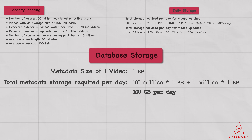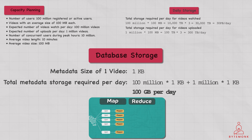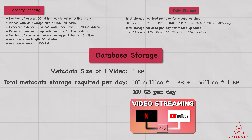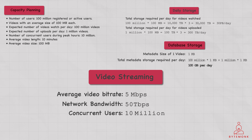The videos can be stored in a distributed file system such as HDFS, which can provide reliable and scalable storage for large amounts of data. Alternatively, videos can also be stored in a cloud storage service such as Amazon S3 or Google Cloud Storage. Assuming an average video bitrate of 5 Mbps, we would need at least 50 Tbps of network bandwidth to handle 10 million concurrent users.